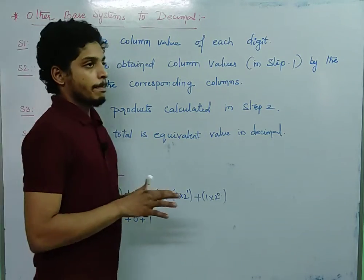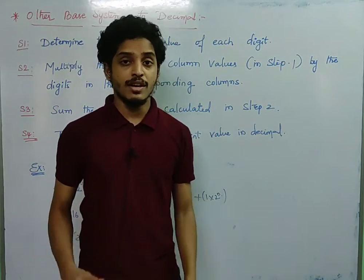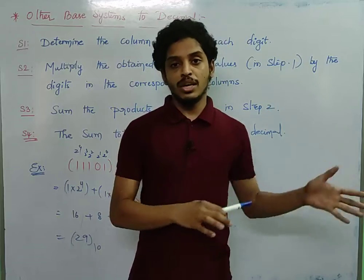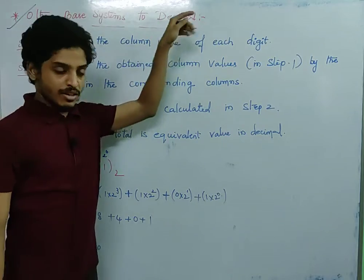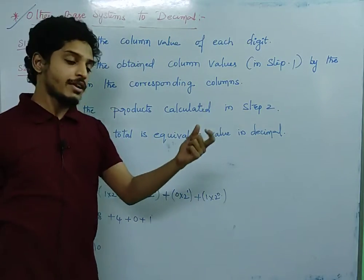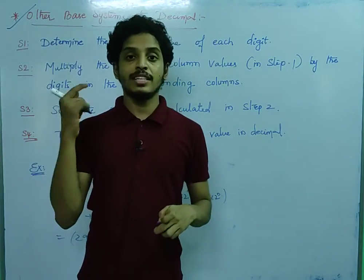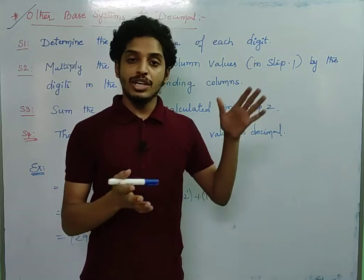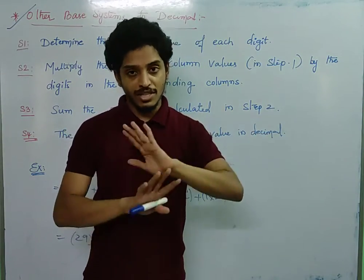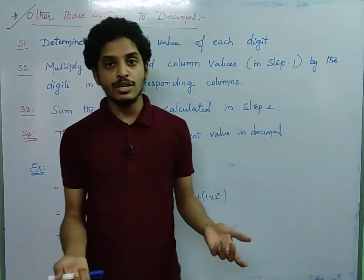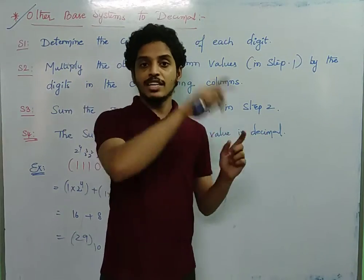Binary to hexadecimal and hexadecimal to octal have their own procedures. If you don't know any of these values, the first easy step is to convert to decimal first, then to the target base system. That will give you the same final answer.